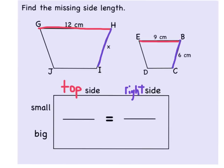Now, I'm going to go ahead and fill in my information. For my small figure, the top side of the small figure is nine centimeters. The right side of the small figure is six centimeters. Now, I'm going to look at my large figure. The top side of my big figure is 12 centimeters. And the right side of my big figure is the piece I'm trying to figure out. So, we'll call it X.